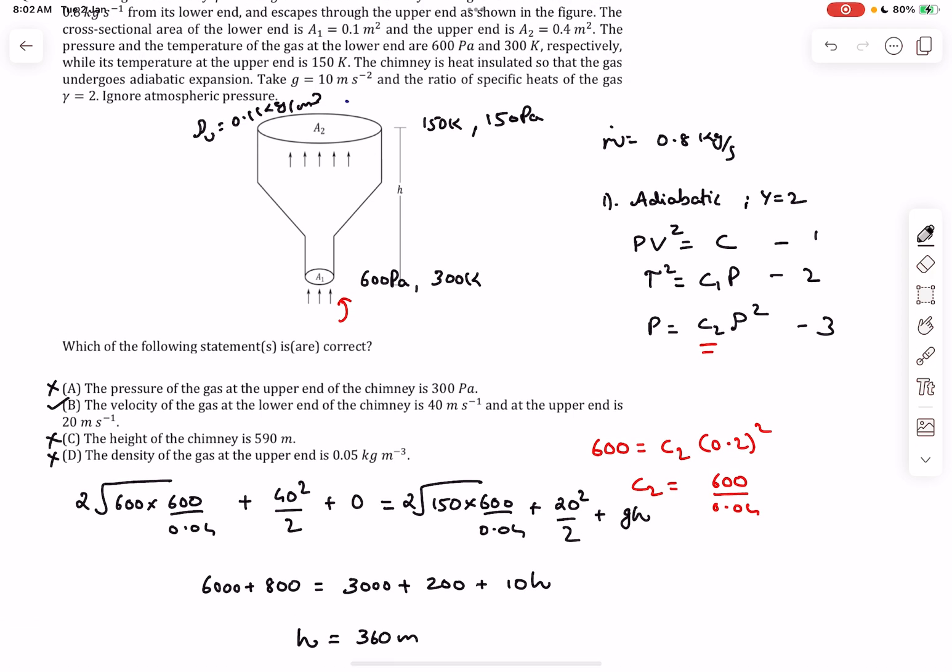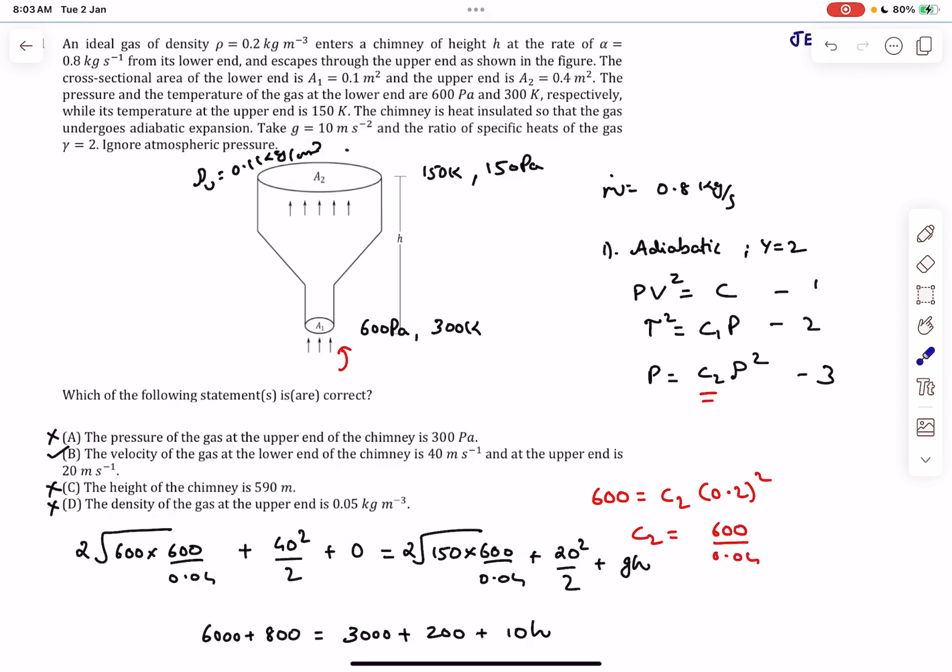Option C is also wrong. I don't know what the official key was, but I believe if you solve this using the usual Bernoulli theorem you will get 590 as the correct answer. I don't know if they gave that as the correct answer, but it's actually wrong. That was it for this video. If you enjoyed the video, do like and subscribe and thanks for watching.